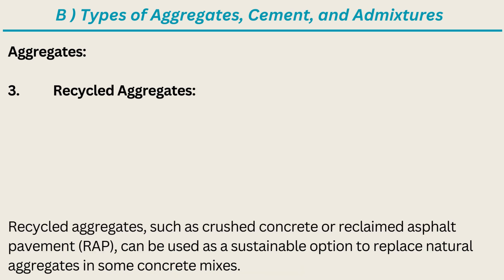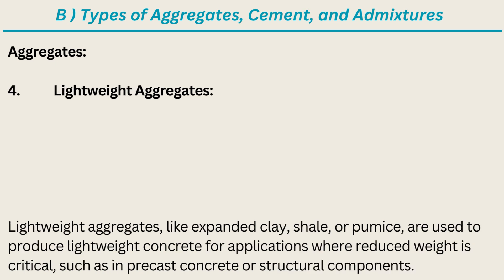Item 3: Recycled Aggregates. Recycled aggregates, such as crushed concrete or reclaimed asphalt pavement, can be used as a sustainable option to replace natural aggregates in some concrete mixes. Item 4: Lightweight Aggregates. Lightweight aggregates, like expanded clay, shale, or pumice, are used to produce lightweight concrete for applications where reduced weight is critical, such as in precast concrete or structural components.